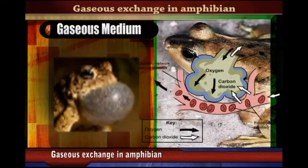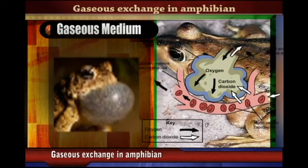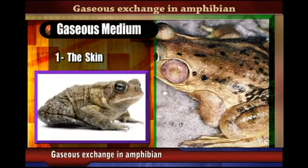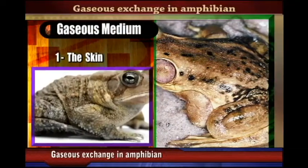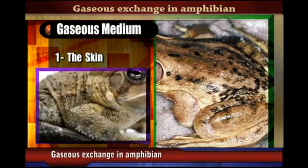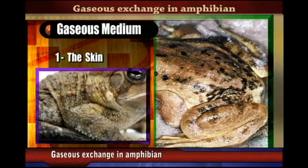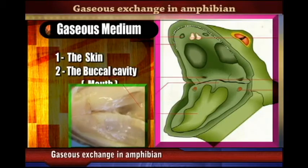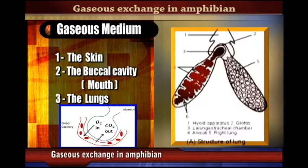Gaseous exchange in amphibians takes place in three main body parts: the skin, the buccal cavity (that is, the mouth), and the lungs.